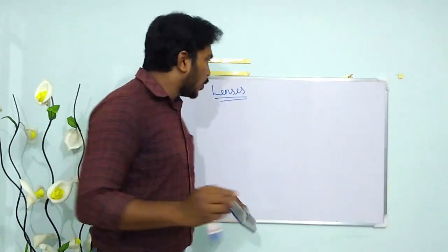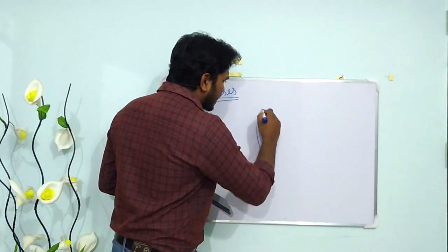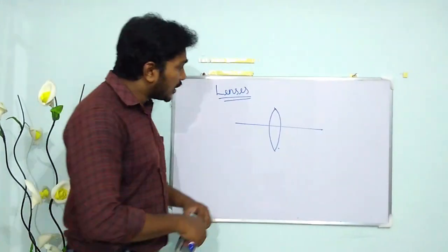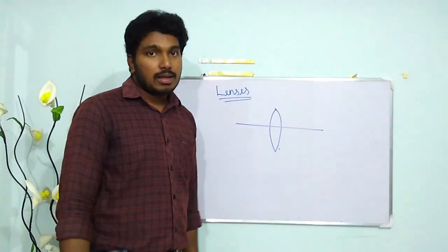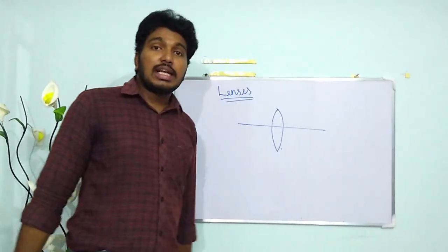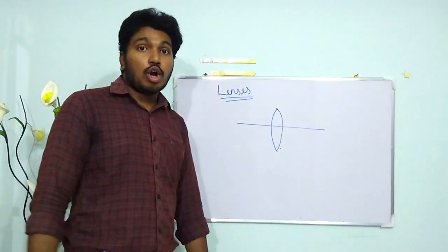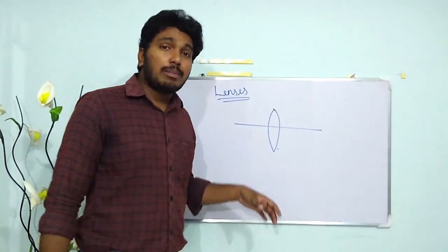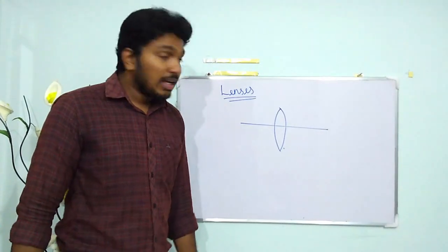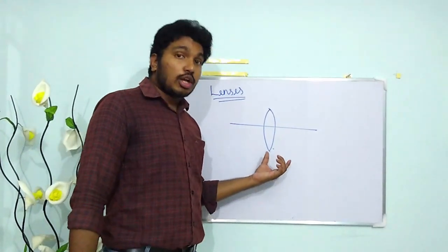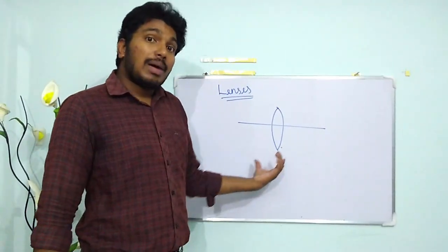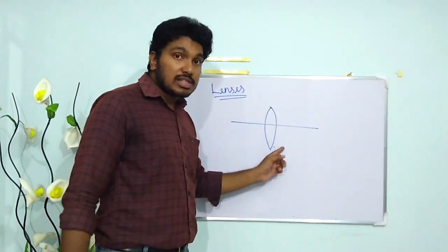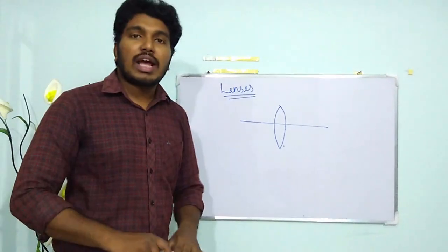A lens is something which has two refracting surfaces. What I have drawn here is a converging lens, also called a convex lens, or sometimes a biconvex lens. It has two spherical refracting surfaces.